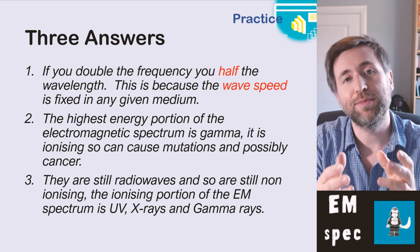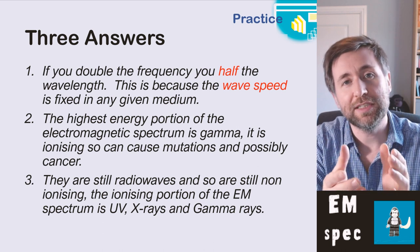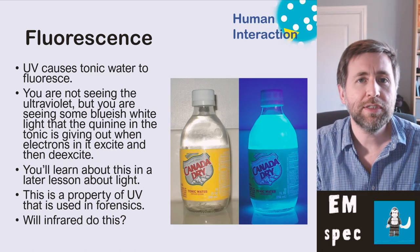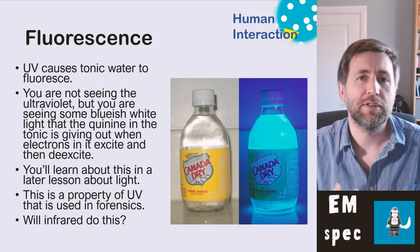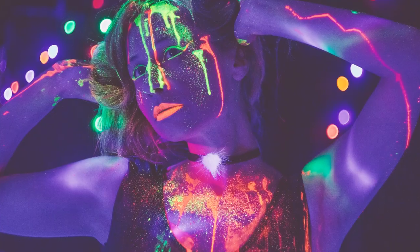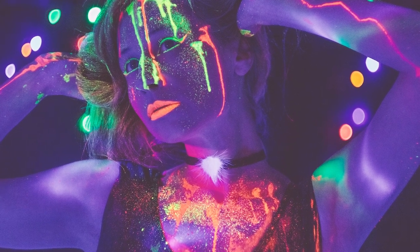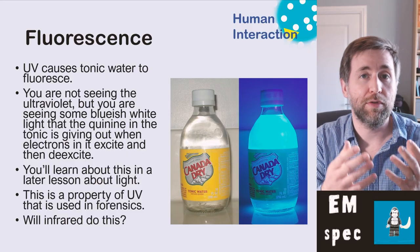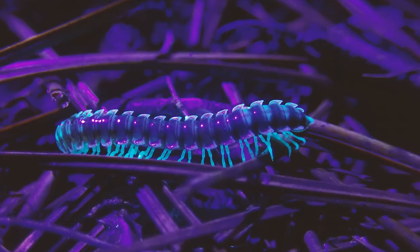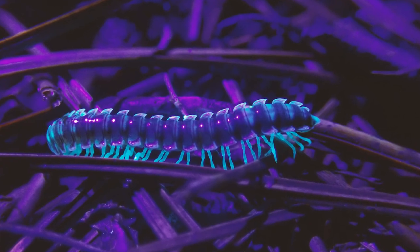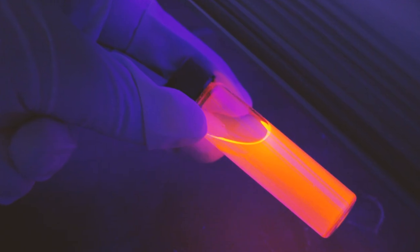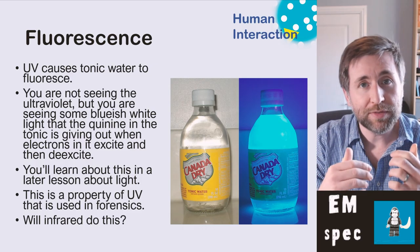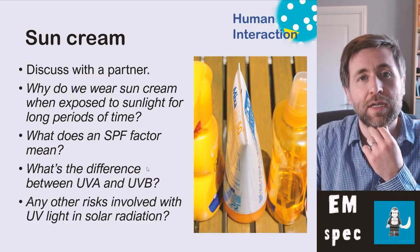Ultraviolet light can be used in forensics because it causes fluorescence. Ultraviolet light, when it shines on other things, can make them give out light — those things absorb the ultraviolet and give out visible light. It's important to understand that you aren't seeing the ultraviolet; you're seeing the visible light given out by the object as it absorbs ultraviolet and re-emits visible light.